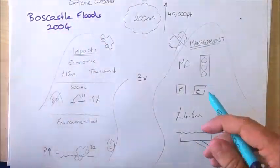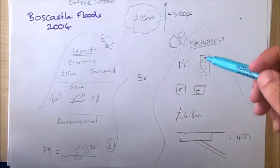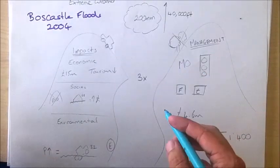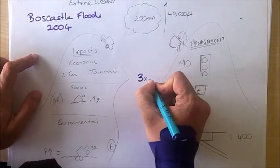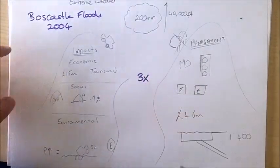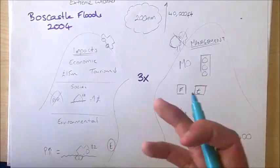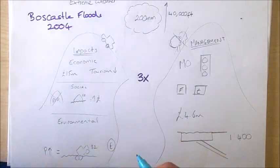We're first going to look at the causes for that, and we can split those into physical or human causes. So we'll start with the physical causes. Firstly, Boscastle sits on the confluence of three rivers. The confluence is the point at which the rivers join. Obviously, three rivers coming together does increase the chances of flooding.